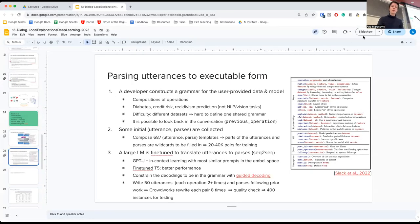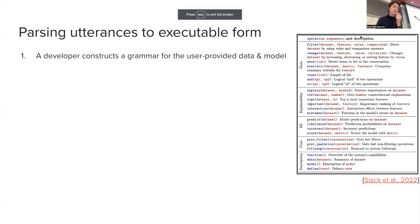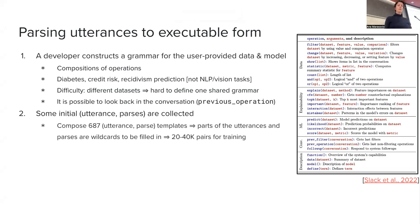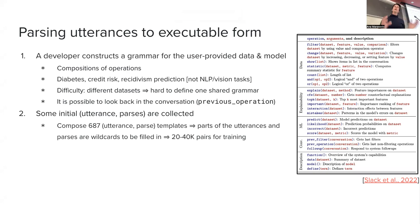What they did — and today this might be done in a simpler way with methods like Llama 2 — is they first composed 687 utterance-parse templates. They literally wrote down many possibilities for going from utterance to the parse, and made it into a template such that they can fill different parts of the utterances and get many of these pairs — around 20,000 to 40,000 such pairs.